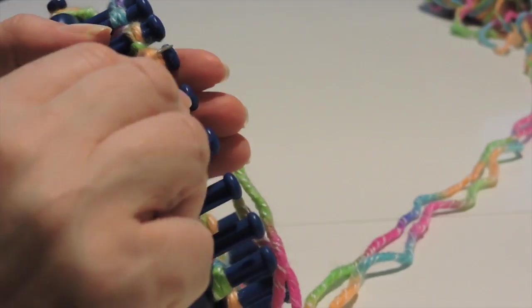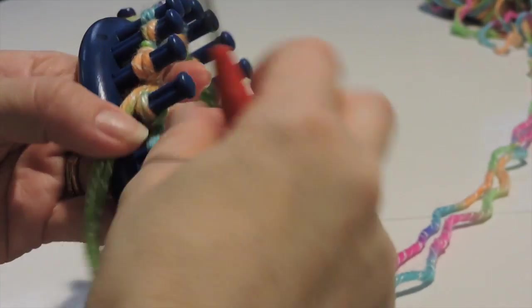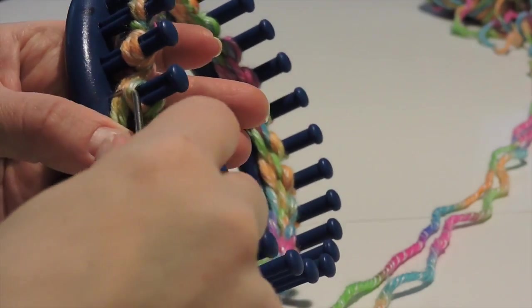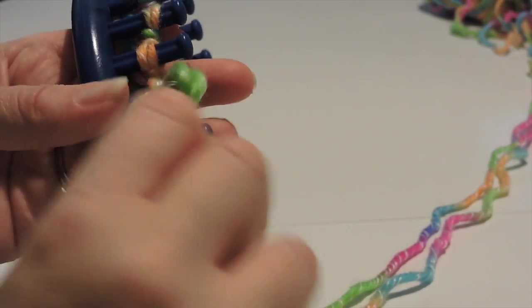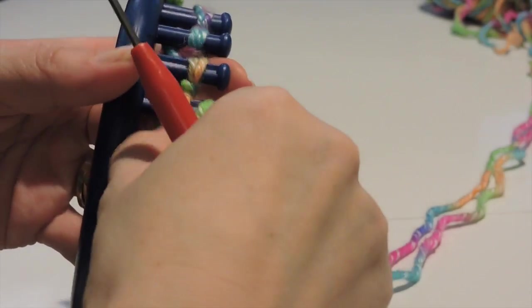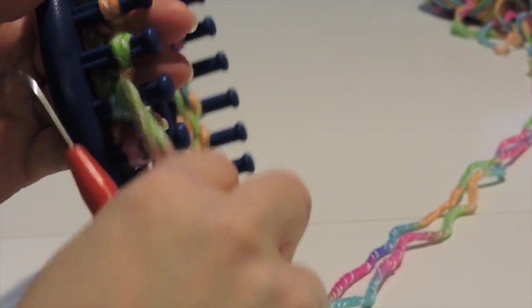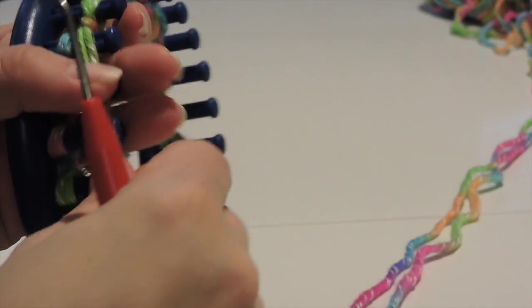So again, this is the flat knit. And this is the purl. And I'm taking the working yarn up through, taking it off the peg and reattaching the loop and pulling it snug, but not too snug.